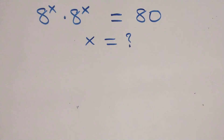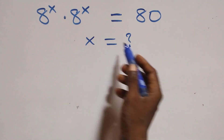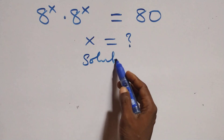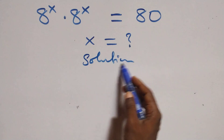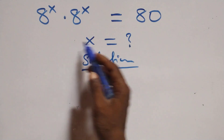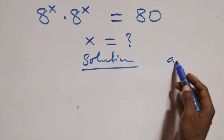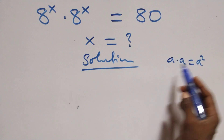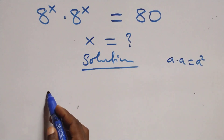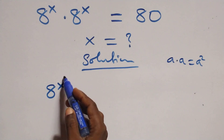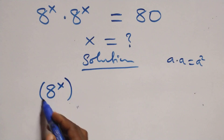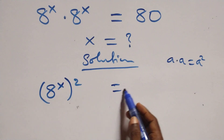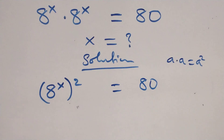Hello, you are welcome. How to solve this nice exponential equation. From here, this follows: we have a times a, which can be written as a squared. Here we can write it as a raised to power x, four squared, equals to 80.